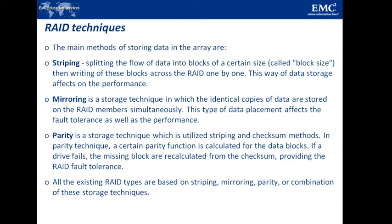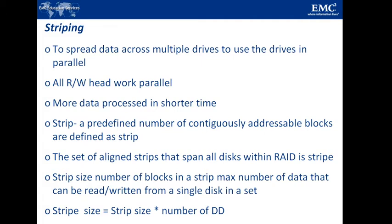Striping is a technique to spread data across multiple drives to use the drives in parallel. All read and write heads work simultaneously, allowing more data to be processed in a shorter time and increasing performance compared to reading and writing from a single disk. Within each disk in a RAID set, a predefined number of contiguously addressable disk blocks is called a strip. The set of aligned strips that spans across all the disks within the RAID set is called a Stripe.